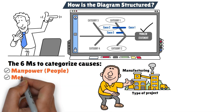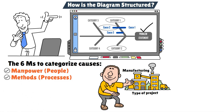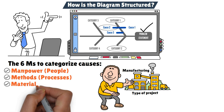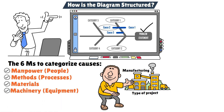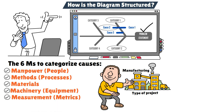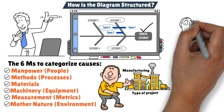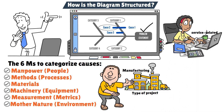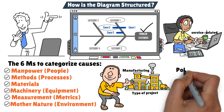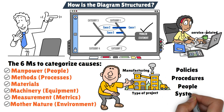The six M's are: Manpower or people, Methods or processes, Materials, Machinery or equipment, Measurement or metrics, and Mother nature or environment. If you're working on a service-related or non-manufacturing project, you may use different categories such as policies, procedures, people, and systems. The flexibility of the Ishikawa diagram is one of its strengths.